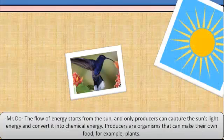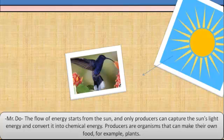The flow of energy starts from the sun, and only producers can capture the sun's light energy and convert it into chemical energy. Producers are organisms that can make their own food, for example, plants.